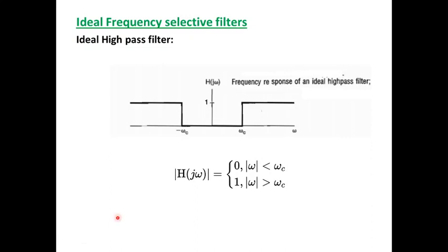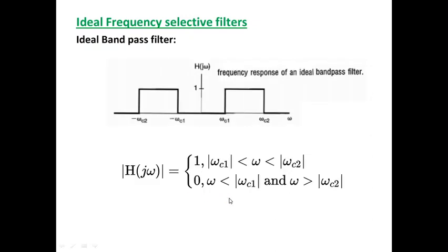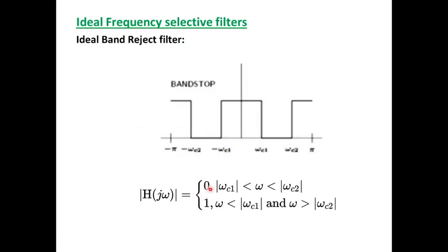Similarly, an ideal high pass filter passes only signals where the frequency is greater than omega_c, and on the negative side greater than minus omega_c. H(jω) is modeled by the corresponding equation. Similarly, a band pass filter allows only a specific range of frequencies — from omega_c1 to omega_c2, and minus omega_c1 to minus omega_c2. The response is equal to 1 only in these pass bands, otherwise the response is equal to 0. A band reject or band stop filter has a response equal to 0 for a specified band from omega_c1 to omega_c2, and equal to 1 for the remaining frequencies.